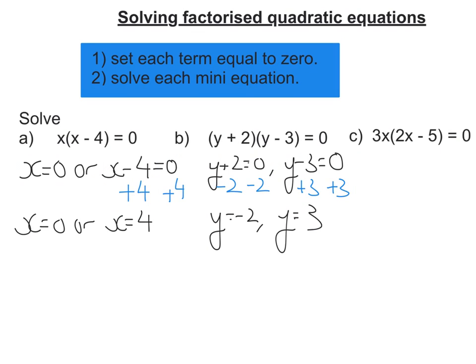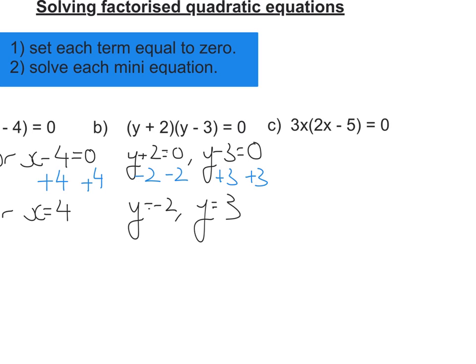Okay, we move on to our last one here. So again, set each term equal to 0. So either 3x is going to be equal to 0 or 2x minus 5 is going to be equal to 0.